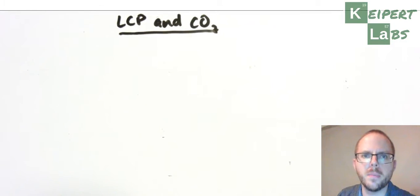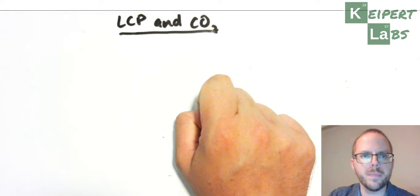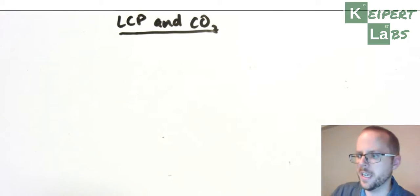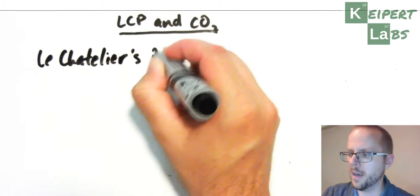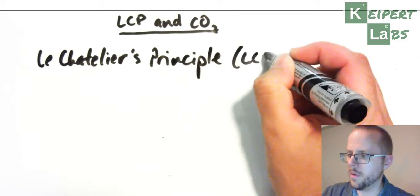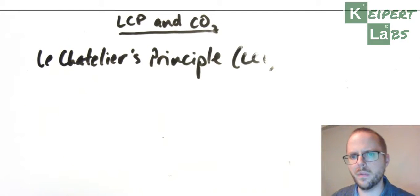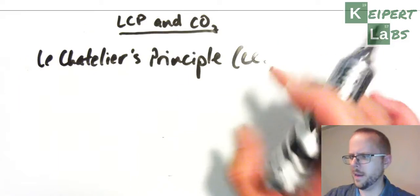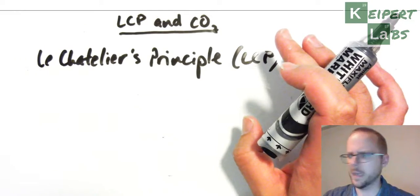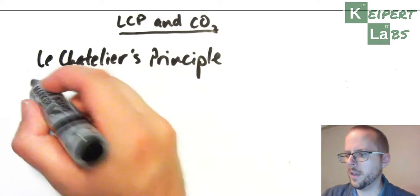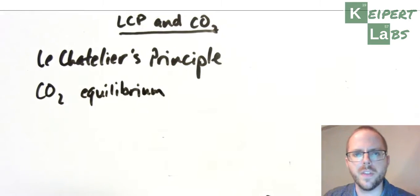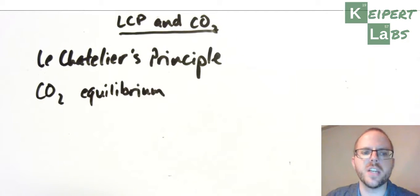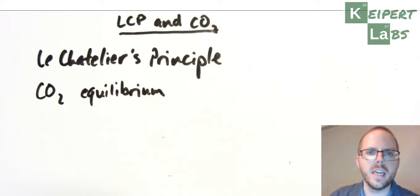Hi everyone, welcome to this episode of Kuypert Labs. Today we are going to be looking at Le Châtelier's Principle, specifically how it relates to the carbon dioxide equilibrium. We're going to talk more specifically about Le Châtelier's Principle and then look at it in terms of a carbon dioxide equilibrium, using Le Châtelier's Principle to explain what we see in that equilibrium.